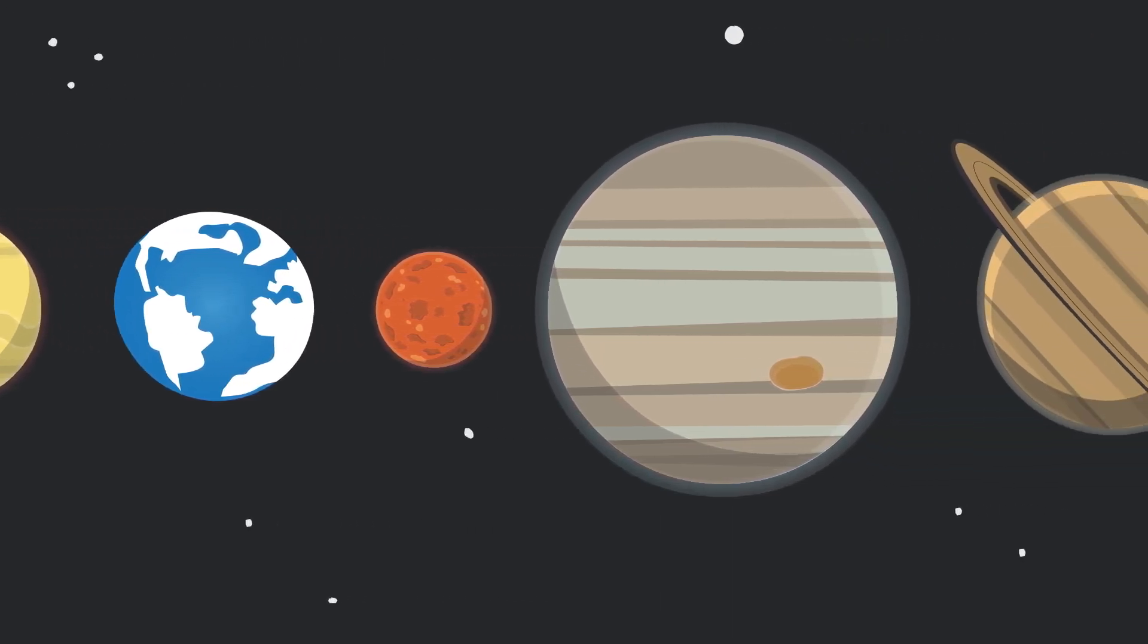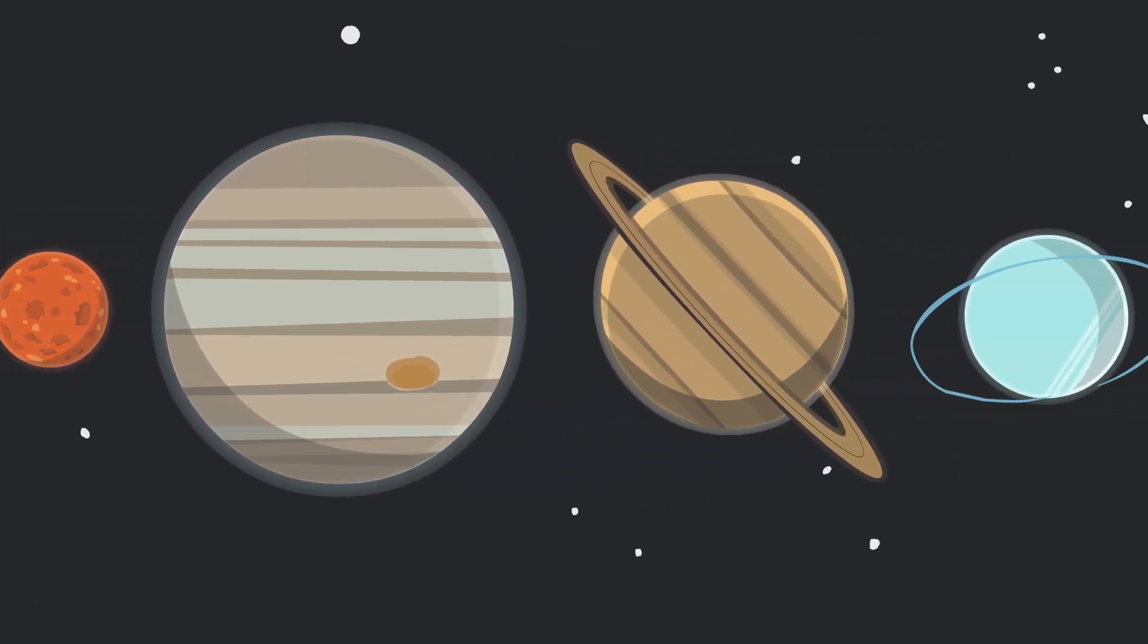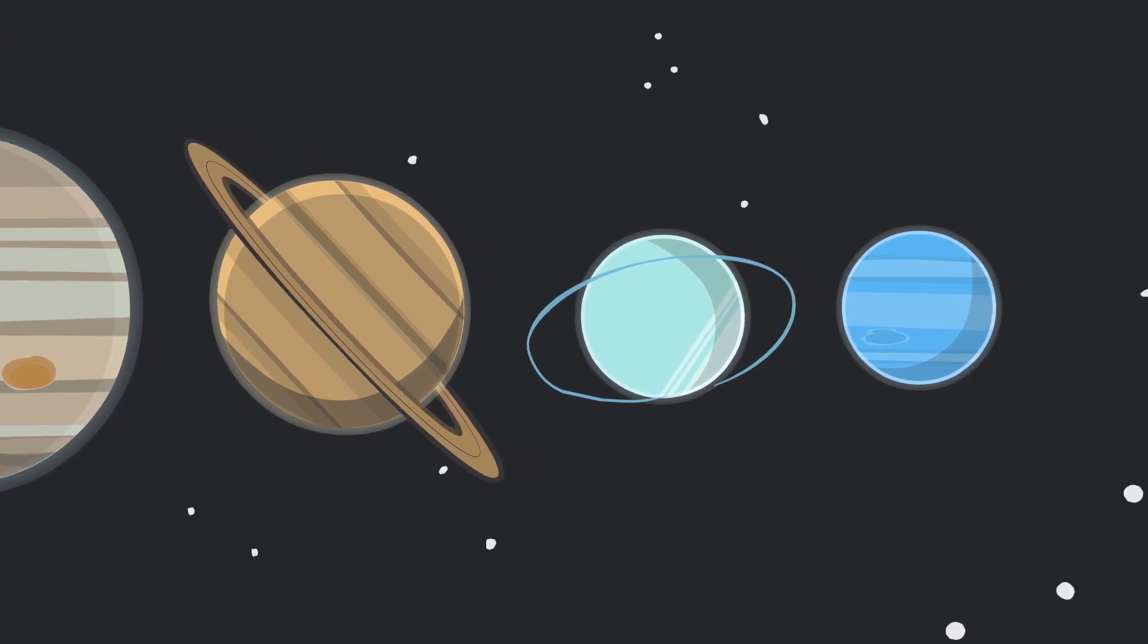All the planets orbit the Sun, which means they move around the Sun in a counterclockwise direction. The planet closest to the Sun is Mercury. It's the smallest planet in our solar system and mostly made of rock. During the daytime the planet is really hot, and at night it's very cold.